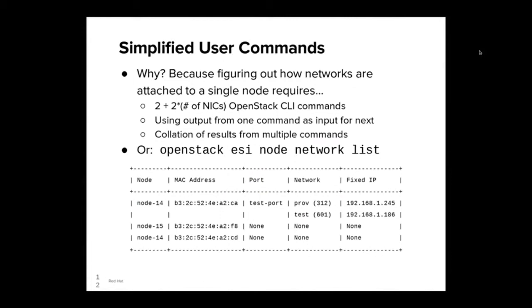Simplified user commands — why? Because if you use the default OpenStack CLI, figuring out how networks are attached to a single node requires two plus two times the number of NICs commands — so six commands if your node has two NICs. You also have to use the output from one command as input for the next, copying and pasting UUIDs, and then collate the results of all those commands. But we learned that it's actually really easy to extend the OpenStack CLI. No one on our team had much experience with the CLI code, but within a few days we had developed OpenStack ESI node network list — a single command that produces consolidated output. We've created additional CLI commands to simplify various operations, and you'll see a lot of them in our demo.